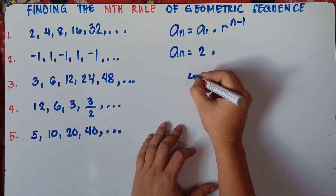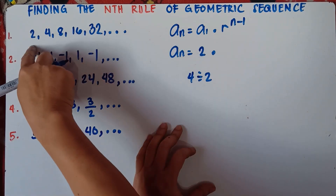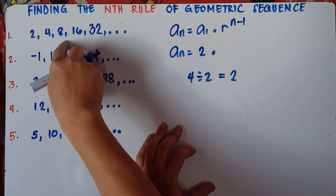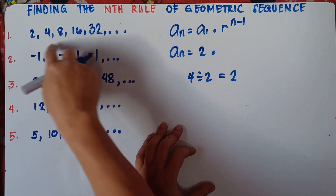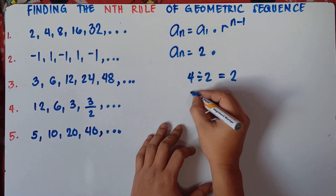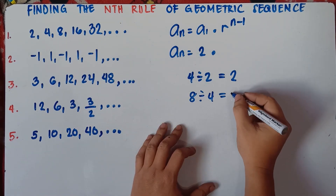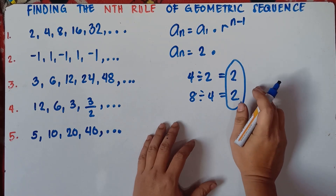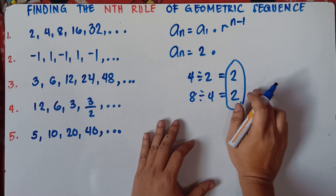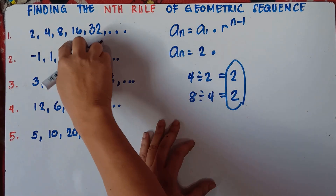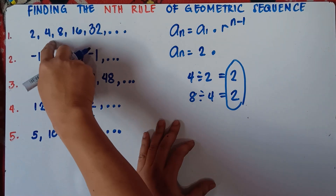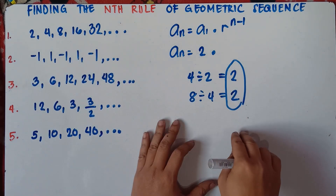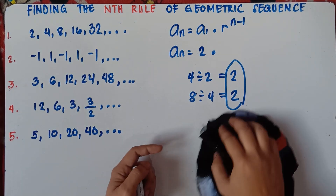To get the common ratio, that would be 4 divided by 2 — second term divided by the first term. So 4 divided by 2 is 2. Now you also check class the third term divided by the second term just to see if this is really a geometric sequence. So 8 divided by 4 is 2. If they have the same answers, therefore this is a geometric sequence. The common ratio is 2.